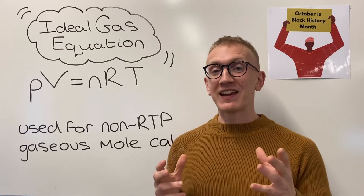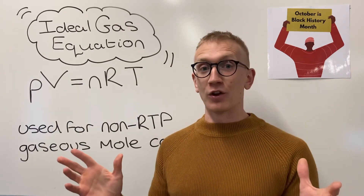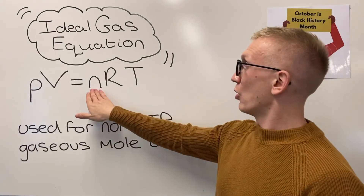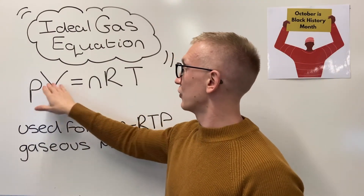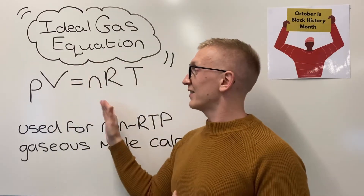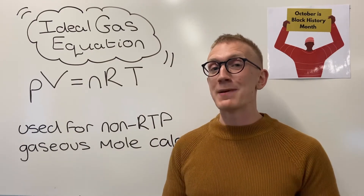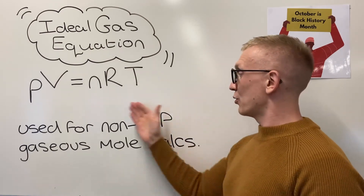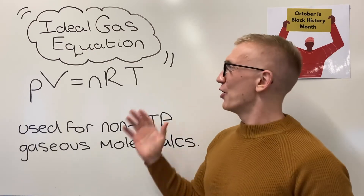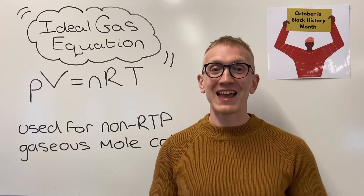In the exam, the expectation is that you'd be able to rearrange the equation as a subject of any of its terms in order to calculate a required quantity. For example, moles would be calculated as pressure times volume divided by R times T. Make sure you can rearrange the ideal gas equation for any term, keep an eye on those units, and remember you're only using it in non-room-temperature-and-pressure conditions. I hope this clears up the introduction to the ideal gas equation — until next time, happy revising!